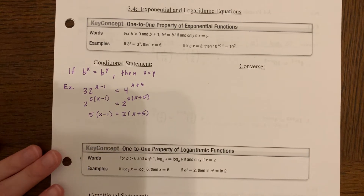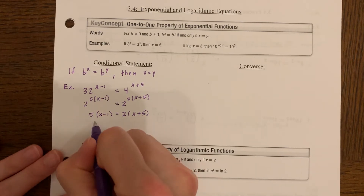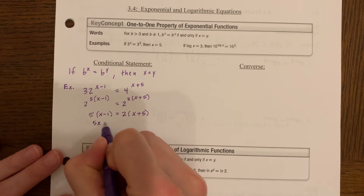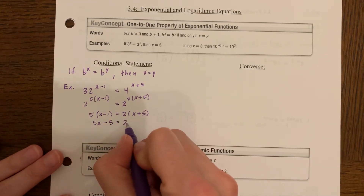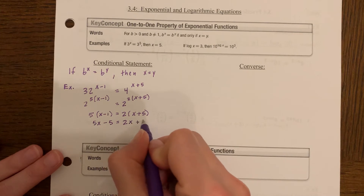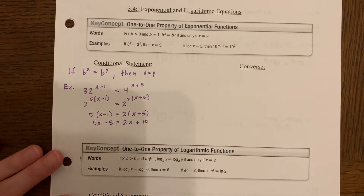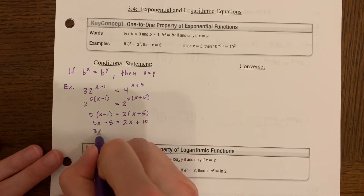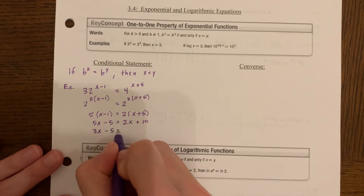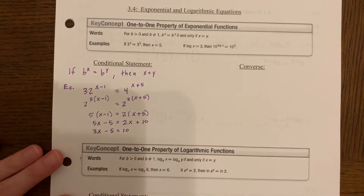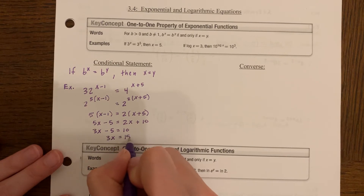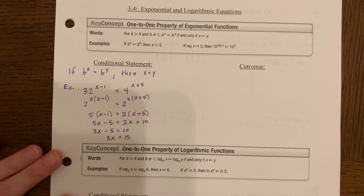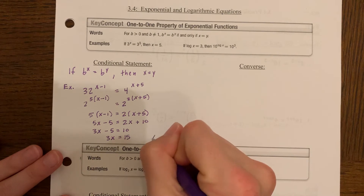I solve this equation for X by distributing the 5 on the left side and the 2 on the right side, then subtracting 2X from both sides, adding 5 to both sides, and dividing by 3. X is equal to 5.